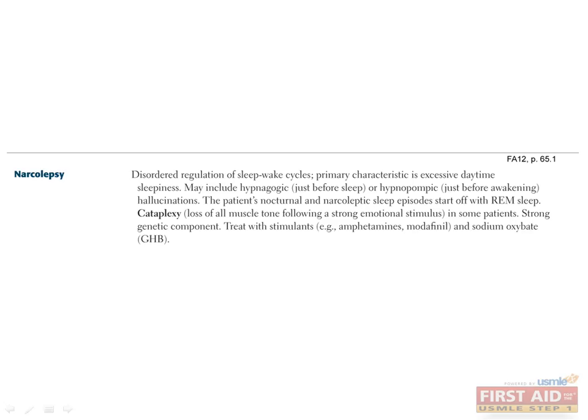Narcolepsy is a condition involving disordered regulation of sleep-wake cycles. Its primary characteristic is excessive daytime sleepiness. Narcoleptics may experience hypnagogic — just before going to sleep — or hypnopompic — just before awakening — hallucinations. Also, the patient's nocturnal and narcoleptic sleep episodes start off with REM sleep rather than stage 1 sleep. Cataplexy is defined as loss of all muscle tone following a strong emotional stimulus and can occur in some patients with narcolepsy. Narcolepsy has been shown to have a strong genetic component and can be treated with stimulants like amphetamines, modafinil, and sodium oxybate. These patients don't actually sleep for a longer period each day than normal people — they simply sleep in an irregular pattern.